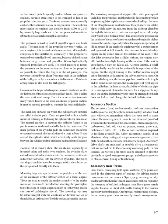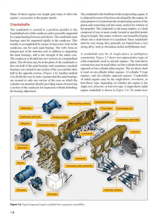Gear trains containing both spur- and bevel-type gears are used in different types of engines for driving engine components and accessories. Spur-type gears are generally used to drive the heavier loaded accessories or those requiring the least backlash in the gear train. Bevel gears permit angular location of short stub shafts leading to the various accessory mounting pads. On opposed reciprocating engines, the accessory gear trains are usually simple arrangements that drive the engine's accessories at the proper speeds.